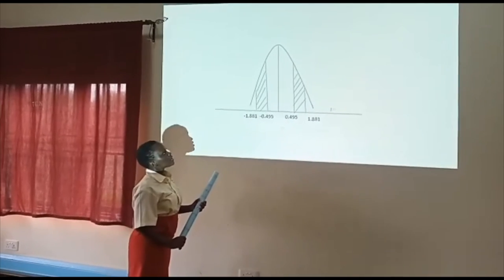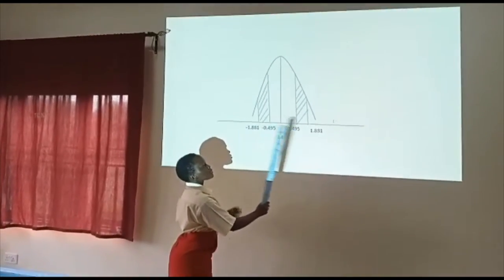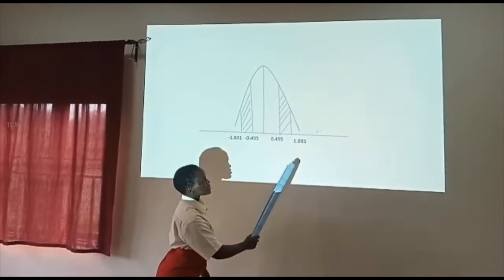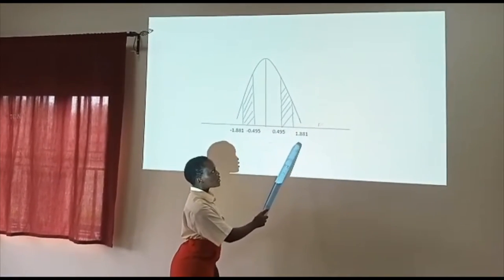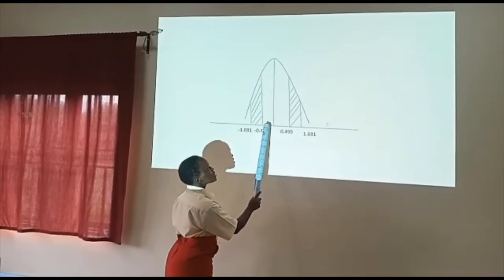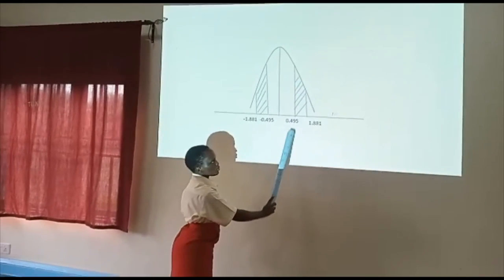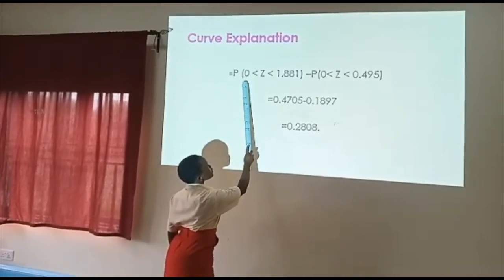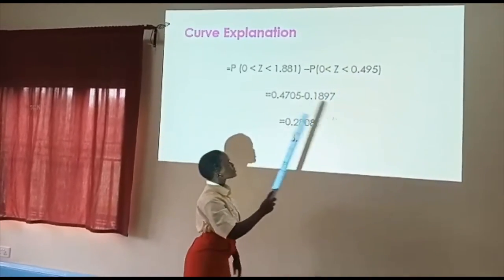However, we can't read negative values on our log books or four figure book. So I will have to take them to the other side by symmetry. We will present them on the normal distribution curve. What I have here will be direct what is on this side. So I am finding what is between 0.495 and 1.881. In the log book, I will read between 0 and 1.881, then subtract what is between 0 and 0.495 to get what is left in the middle, the probability I am looking for.